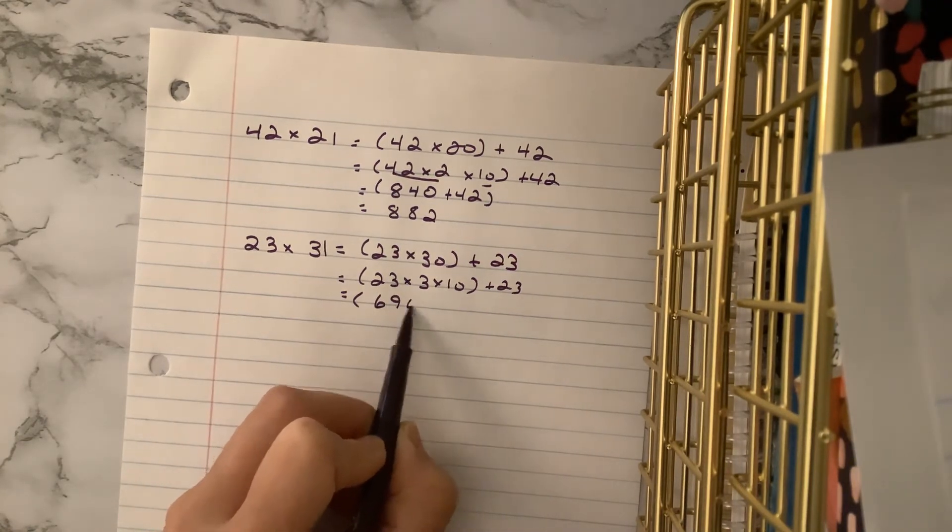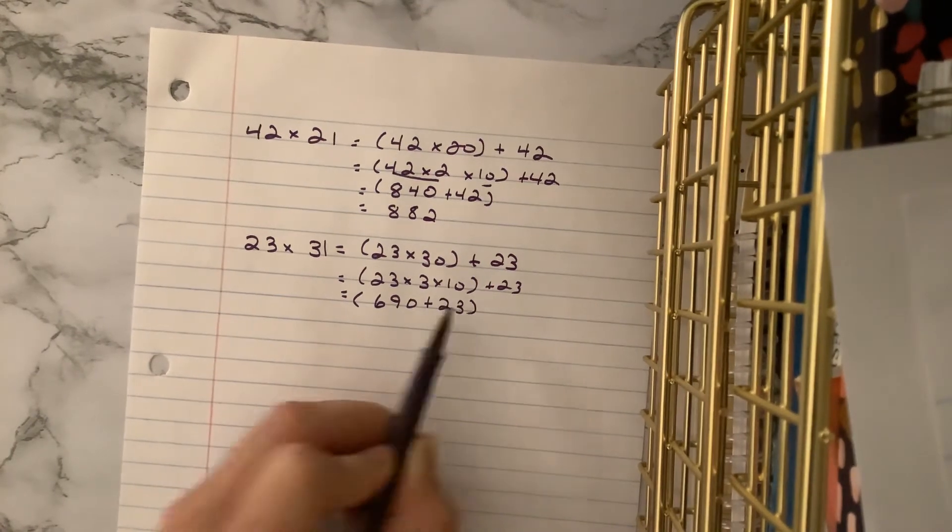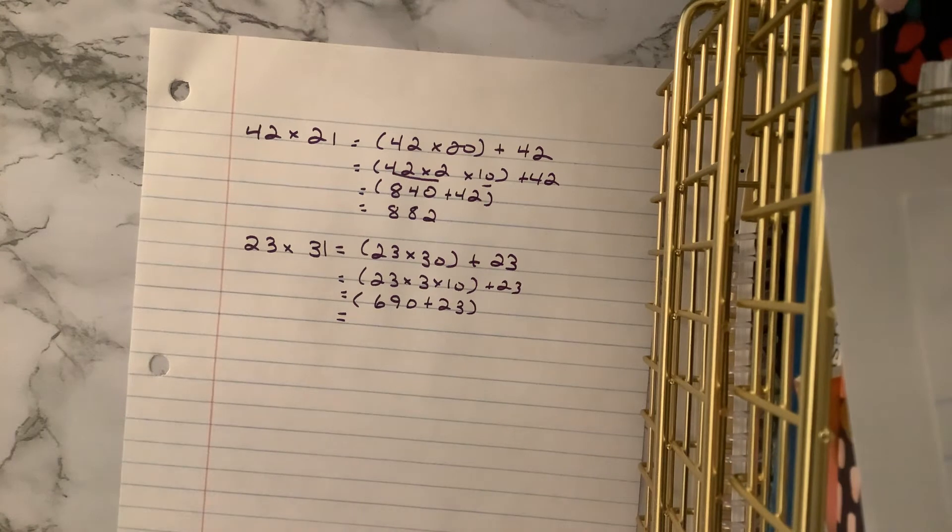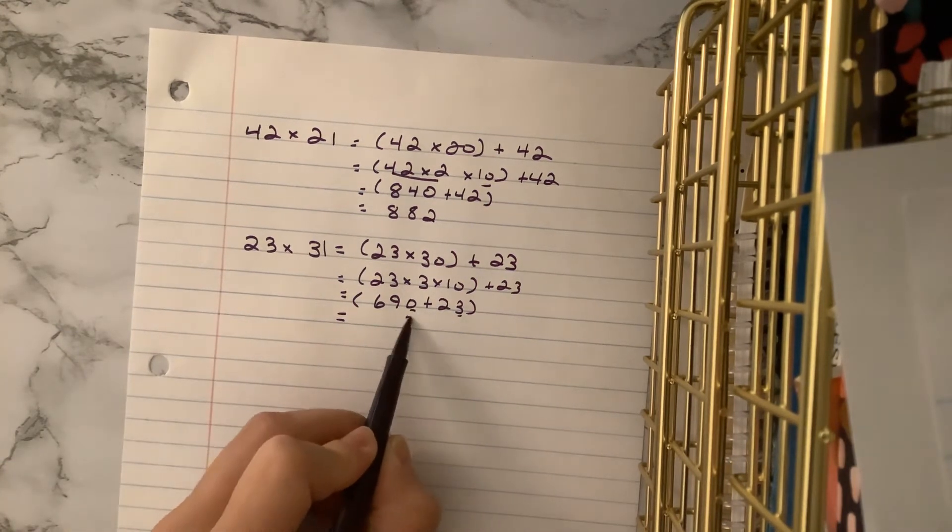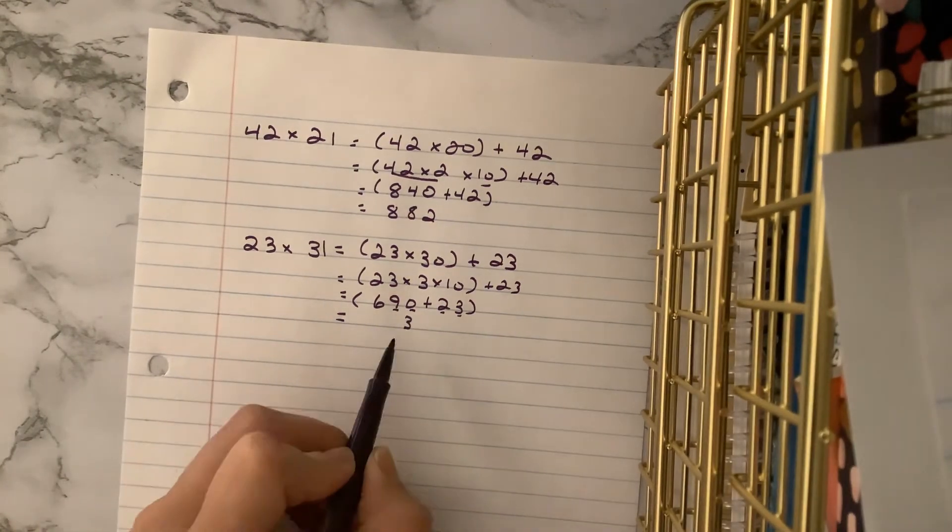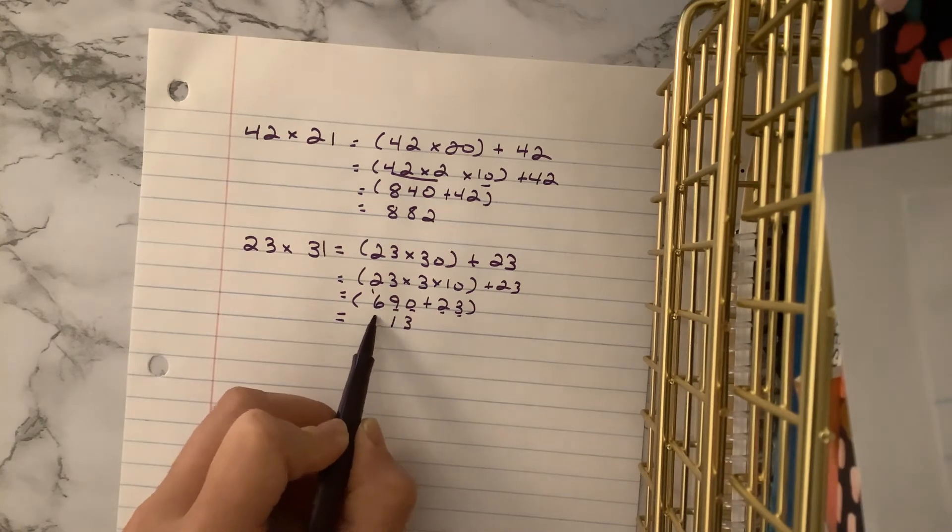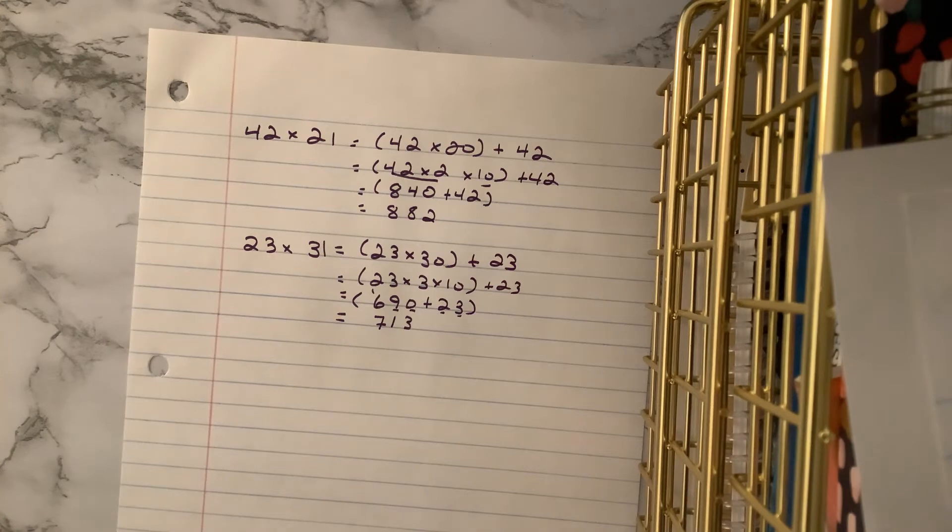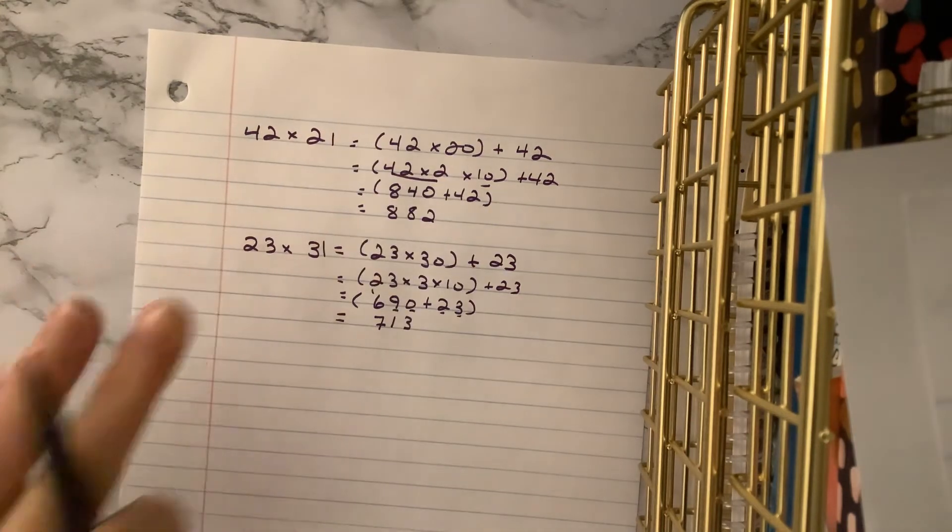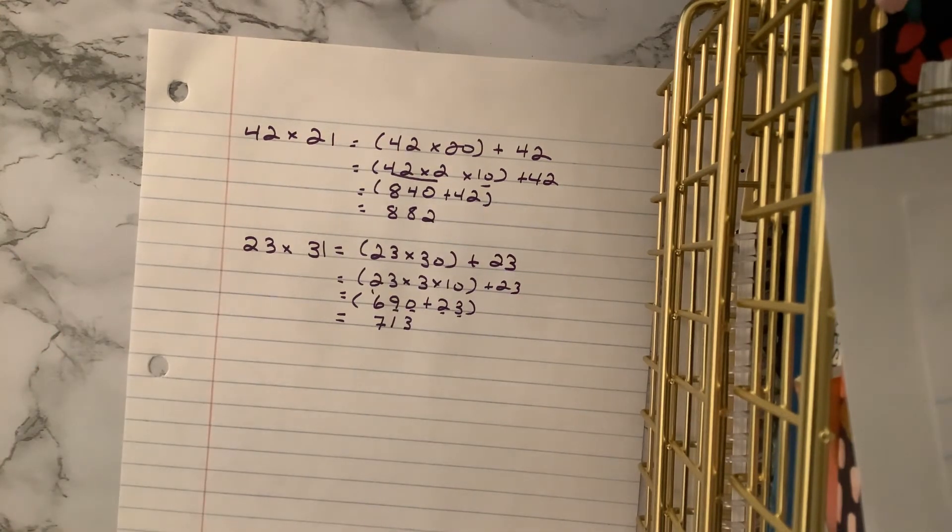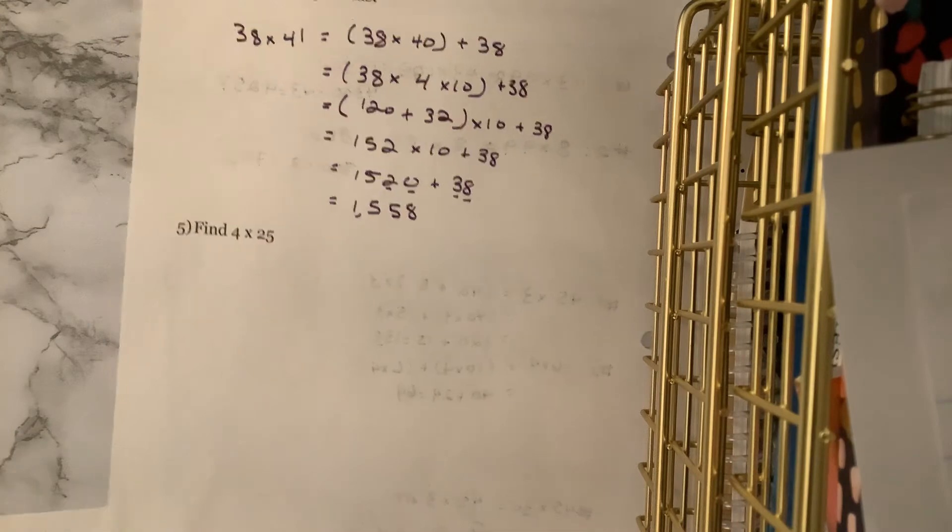69 times 10 is 690. Plus 23. This is a little bit trickier, because you have to do a little bit of regrouping in your head, but I think you can do it. So we start with 3 plus 0 is 3. 2 plus 9 is 11. So we kind of have to keep track of that one extra. 713. So I know this one is complicated, because it's involving really three different mental multiplication strategies. Actually, and if we're adding one mental addition strategy, so you're using four mental math strategies, which is kind of incredible, fifth graders. You should be proud of what you're able to do.